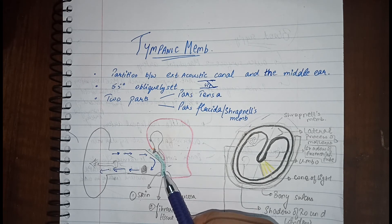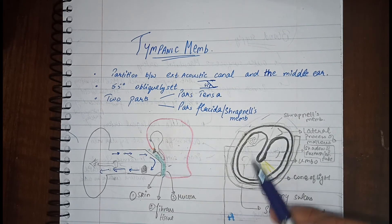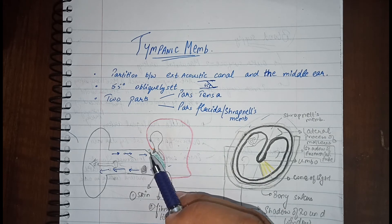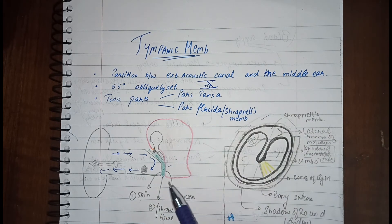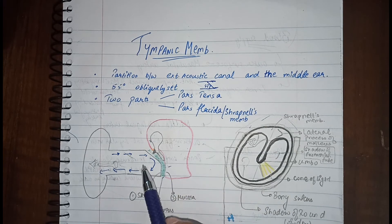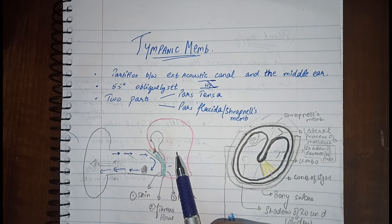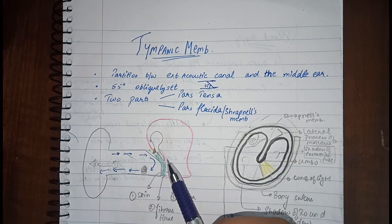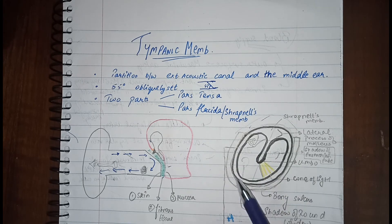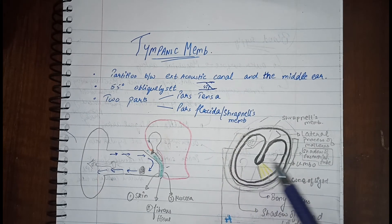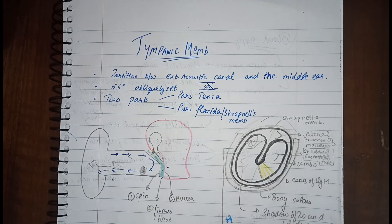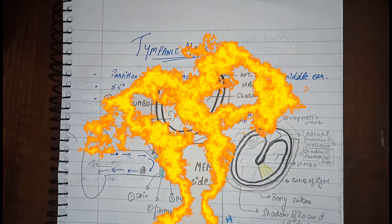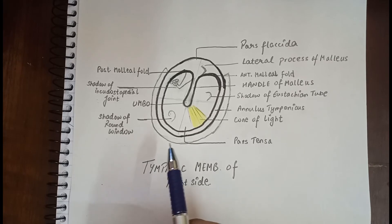There are three reasons why pars tensa is tense and pars flaccida is loose. First, connective tissue is present more in the lower part — the pars tensa — and is very less or absent in the upper part, the pars flaccida. Second, the handle of the malleus pulls the membrane inward, making the pars tensa quite dense. Third, the pars tensa is lodged in a bony sulcus, which also makes it quite tense.